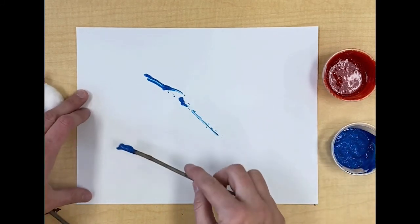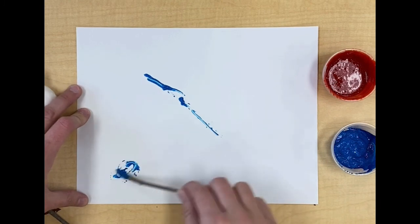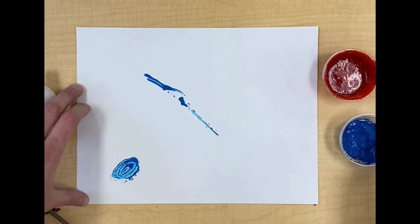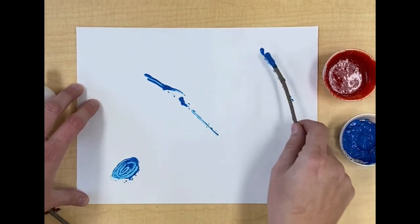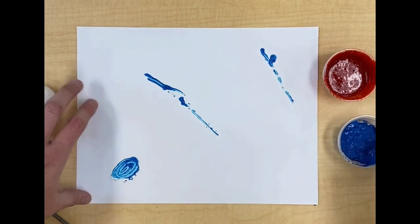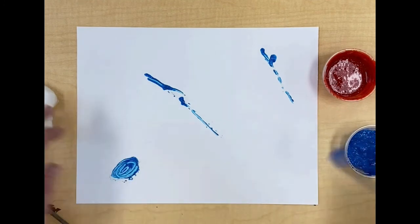All right and I think I'm going to try making some lines with my stick. There's one line. I'm going to make a circle. I'm going to make another line over here.